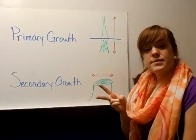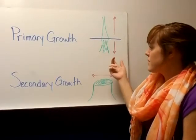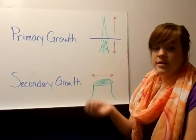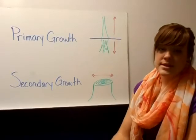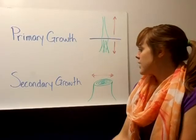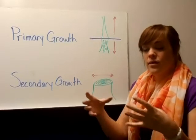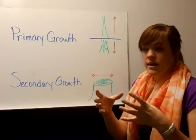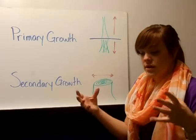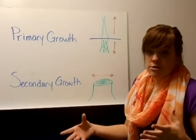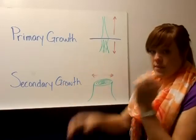There are two types of growth in a plant. Primary growth is when the plant grows taller and the roots get deeper. Secondary growth is when they get wider, and you see that when trees form rings. A tree that's bigger around is typically an older tree. So that's secondary growth and primary growth.